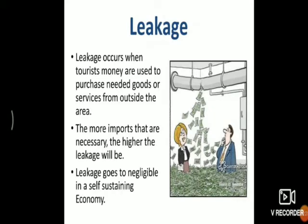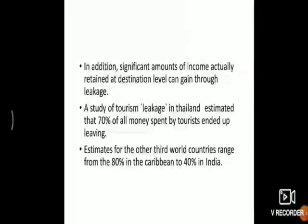For example, if tourism occurs in India but the products are bought from America or China, this is known as leakage — the money automatically goes to other countries. A study of tourism leakage in Thailand estimated that 70% of all money spent by tourists ended up leaving the country, because Thailand imports most of its goods and services from foreign countries. This is how leakage occurs.